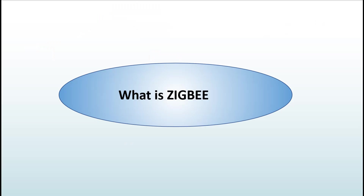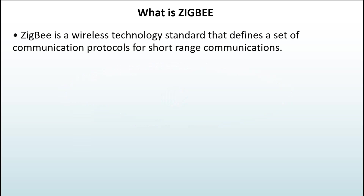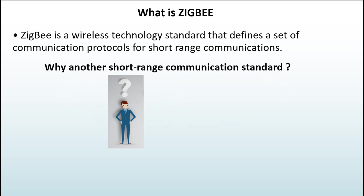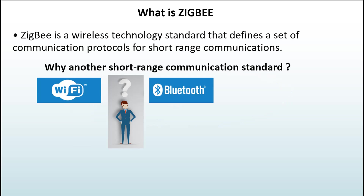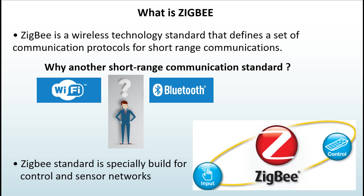What is Zigbee technology? Zigbee is a wireless standard that defines a set of communication protocols for short-range communications. You might ask why we needed a new standard — we already have Wi-Fi and Bluetooth. Well, Zigbee is specially built for control and sensor networks. The objective is to monitor and control devices, which both Bluetooth and Wi-Fi are not quite suitable for.